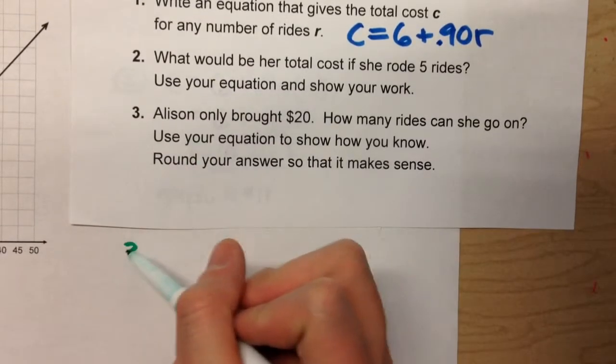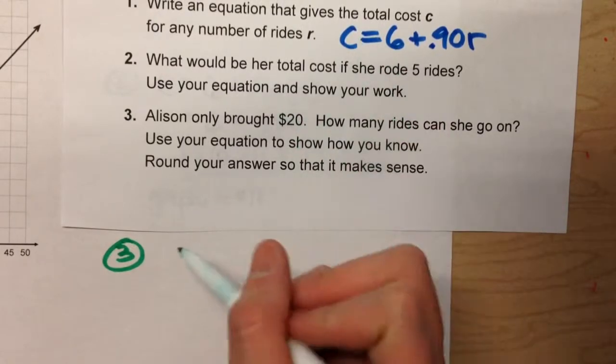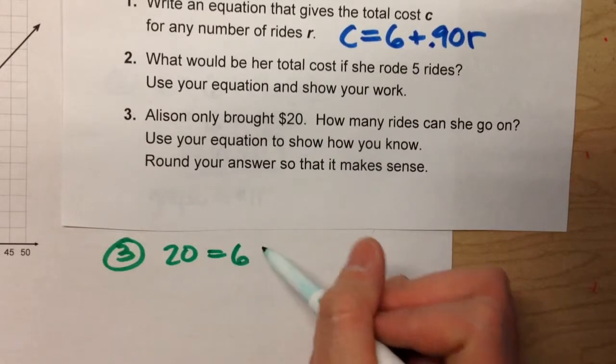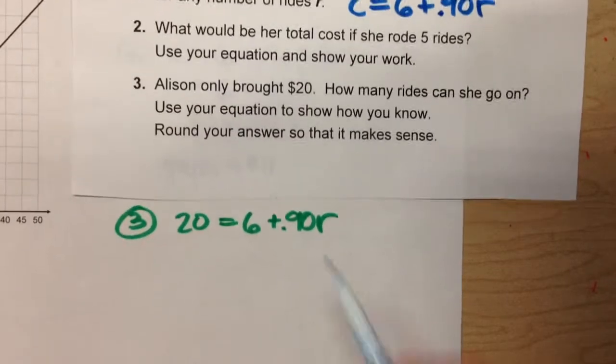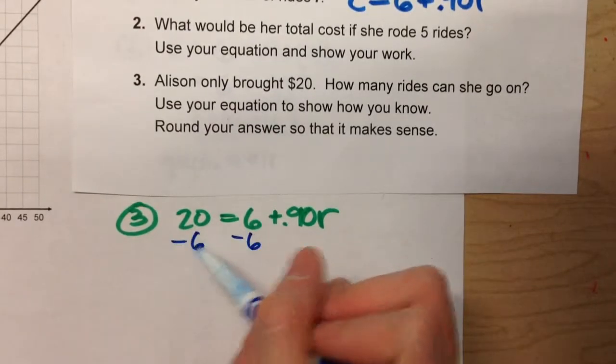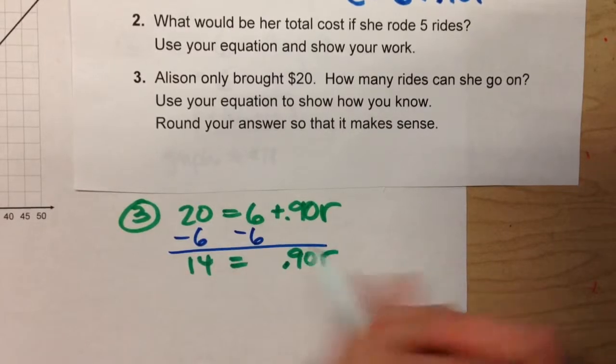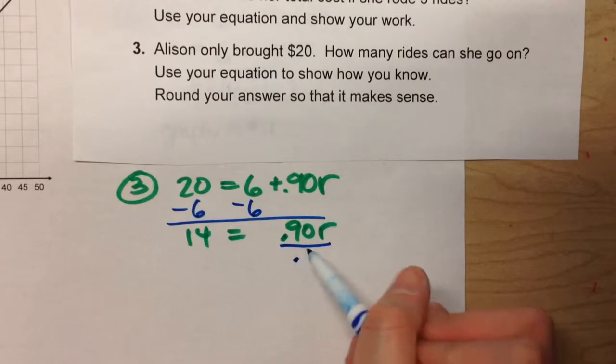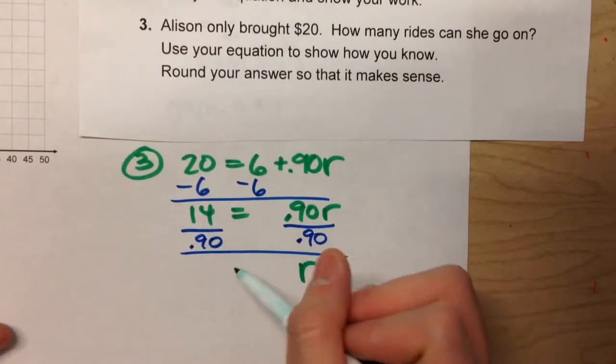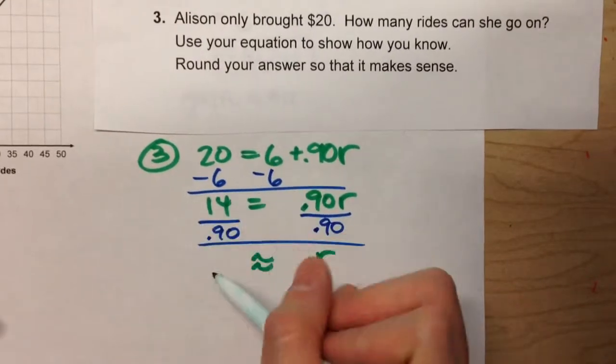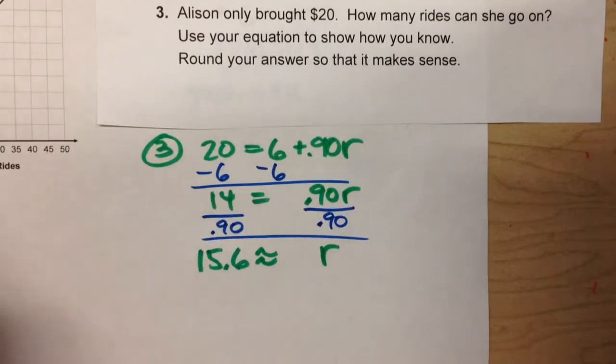The way we've been doing it is, we've been taking our equation, replacing 20, the cost, in for C. So we have 20 equals 6 plus .90R. And then we just solve this algebraically. We minus 6 on both sides. We get 14 equals .90 times R. Divide both sides by .90. R ends up being approximately like 15.6 or something. All right.